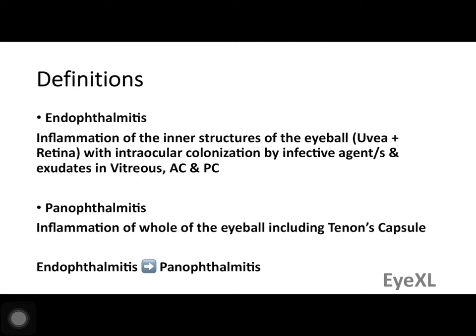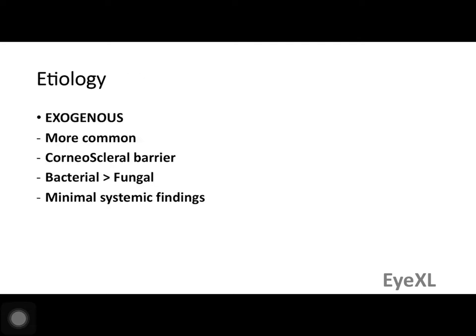Panophthalmitis — 'pan' meaning all layers are affected — is an inflammation of the whole eyeball including the Tenon's capsule as well as the sclera. The sclera is not as involved in endophthalmitis, but in panophthalmitis it is definitely involved. Endophthalmitis is lower on the disease spectrum; panophthalmitis is at the extreme end. A severe, untreated or undertreated endophthalmitis will eventually lead to panophthalmitis.